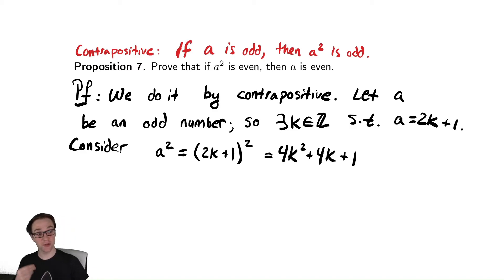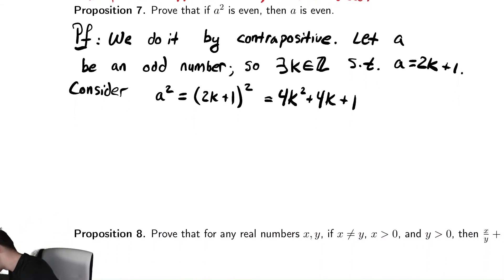And now I need to show that that's odd. To show that something is odd, I need to show that it is 1 more than a multiple of 2. So I need to do a little more algebra. I need to write this as twice something, 2k squared plus 2k plus 1.